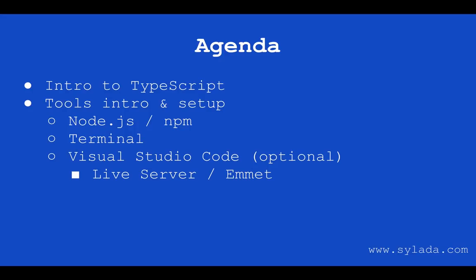And finally, we will be writing our code inside of the Visual Studio Code editor, which ships with the Emmet plugin. Emmet is a plugin that improves your workflow when working with HTML and CSS. We will also be installing the Live Server plugin, which will automatically refresh our browser whenever we make changes. I should mention that this is optional, and if you have your own favorite editor, please feel free to use that.